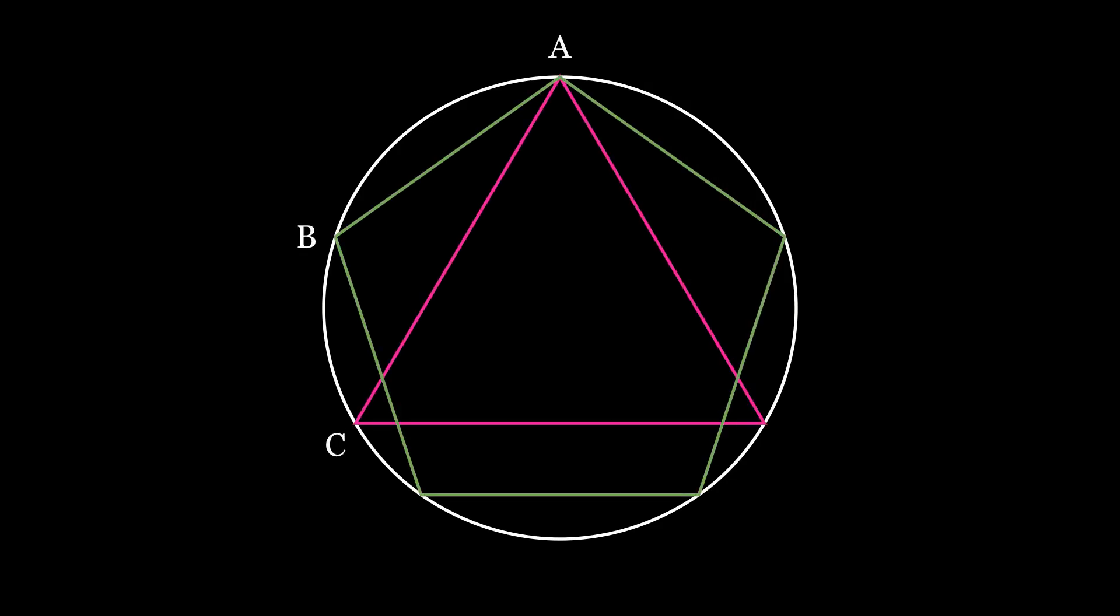Given this circle, we would like to inscribe a regular 15-gon. To do so, inscribe a regular triangle and a regular pentagon so that they share a vertice.